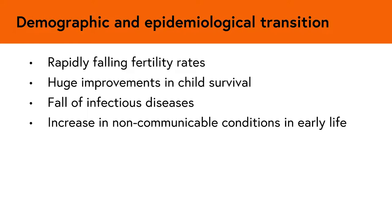In parallel to this demographic transition, there is an epidemiological transition. This is being caused by declines in infectious diseases in childhood, such as diarrheal diseases and pneumonia, and the increasing importance of non-communicable conditions, which have implications for the health needs and programming priorities for adolescents. A growing urgency now are the increasing non-communicable conditions such as injuries, mental health disorders, diabetes, and cardiovascular diseases in early life.